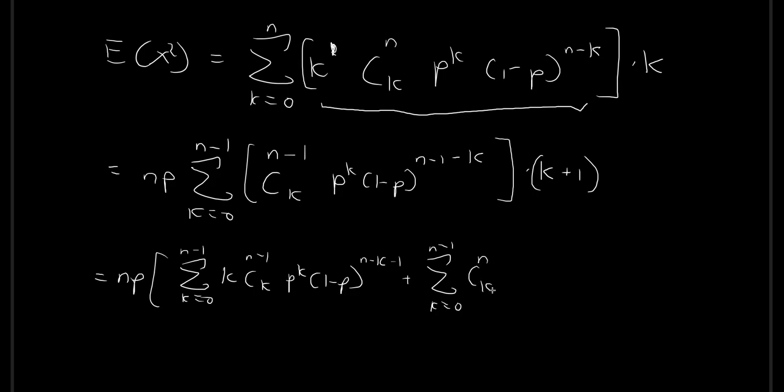And then if you'll notice that the entire term that we have inside this bracket over here, this is just the probability of x taking on each value of k for the binomial distribution with n minus 1 trials.